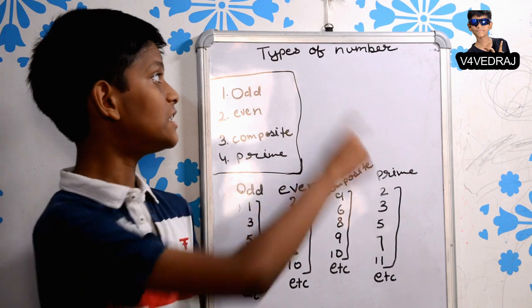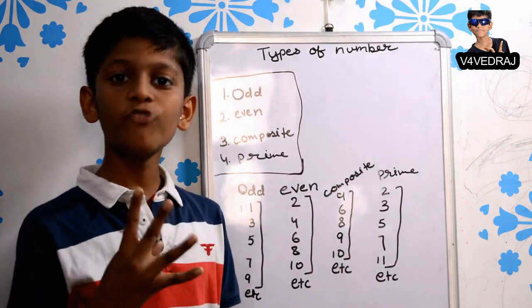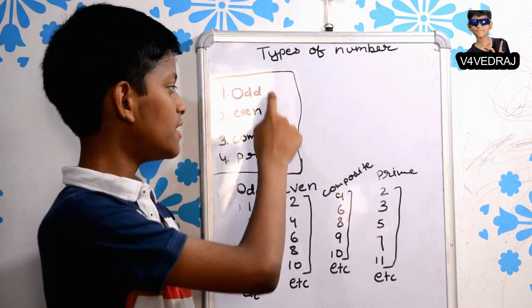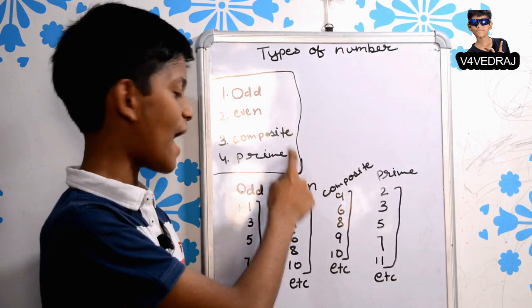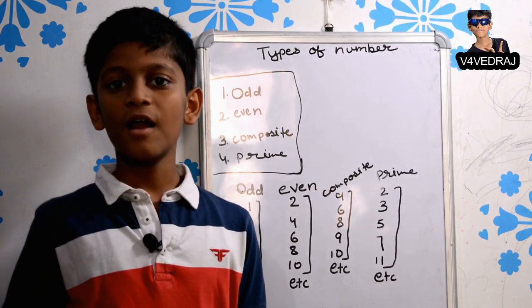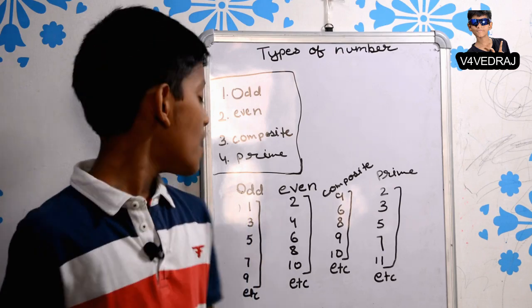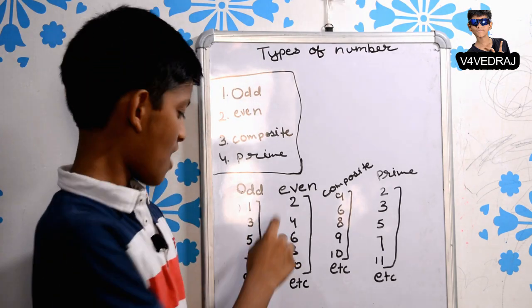Today I will tell you about types of numbers. There are four types of numbers: odd, even, composite, and prime. Odd numbers are numbers which are not divisible by 2, is called odd number.